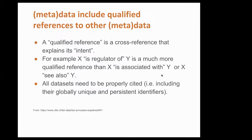The third principle is that metadata include qualified references to other metadata. A qualified reference is a reference that expresses its intent or relationship. In the insulin example, we saw that X is a regulator of Y — which is a lot more informative than X is simply associated with Y. All data sets need to be properly cited, and each of those terms under the Gene Ontology code also appears in the gene ontology, and we can look at the graph for each one.